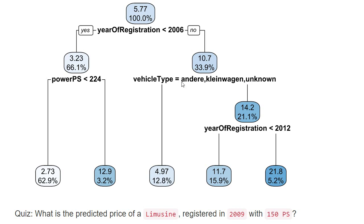Here we have a limousine, so it's none of those vehicle types. The answer is no — the condition is not satisfied. We continue on the right. Now the final condition is again about the year of registration: is it smaller than 2012? Indeed, our car was registered in 2009, so this condition holds true. We continue on the left and end up in a terminal node, also called a leaf. Here we can see the predicted price in thousands of euros — we would predict for such a car a price of 11,700 euros.